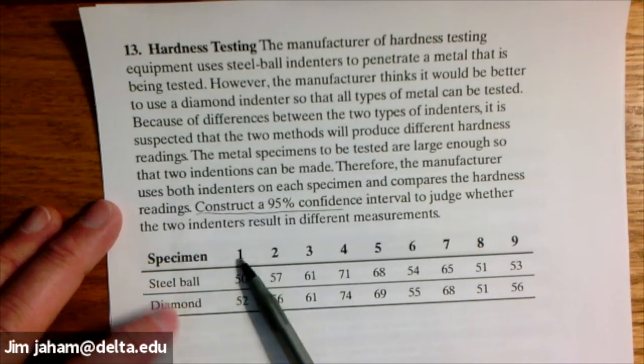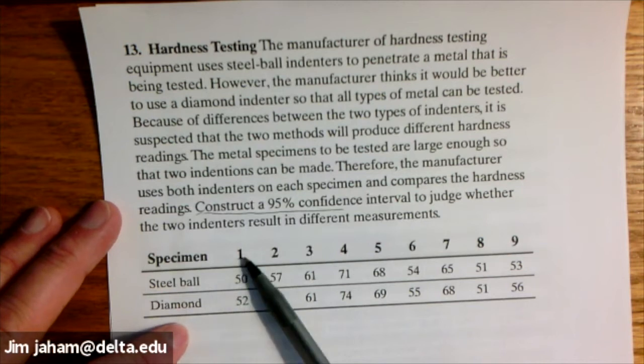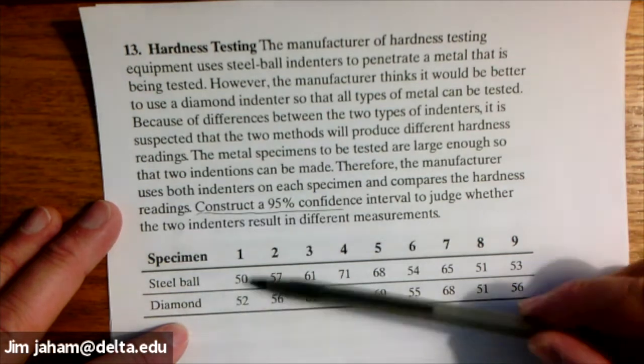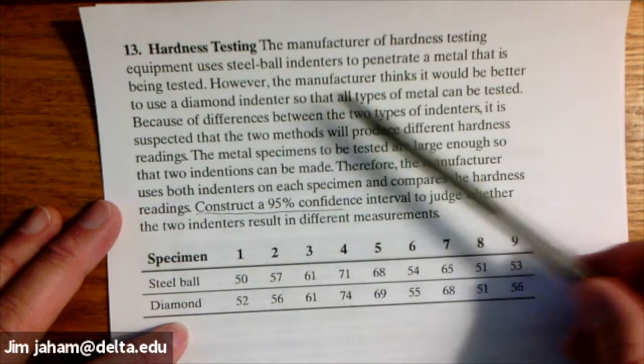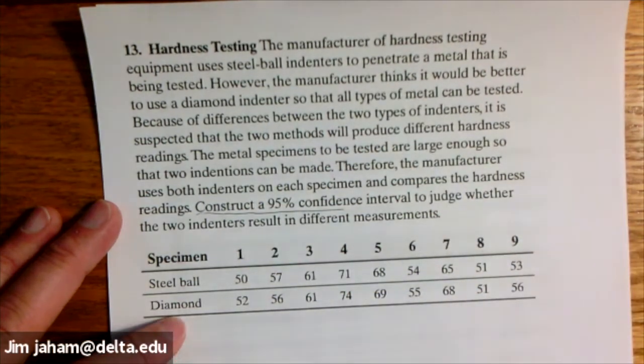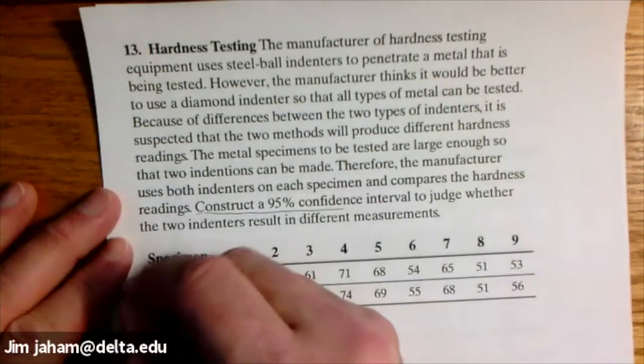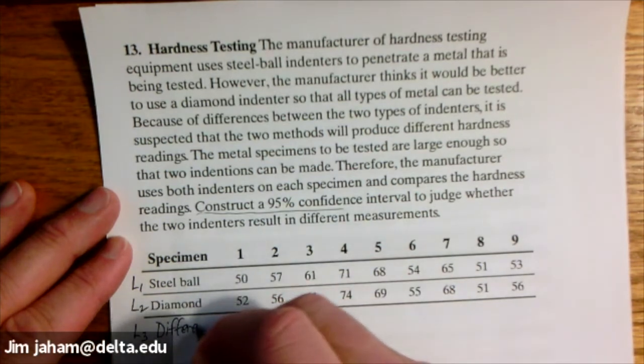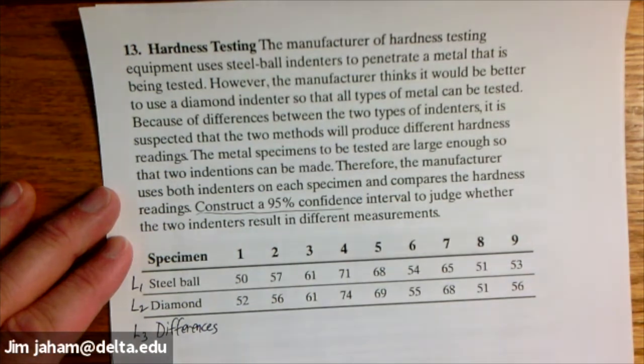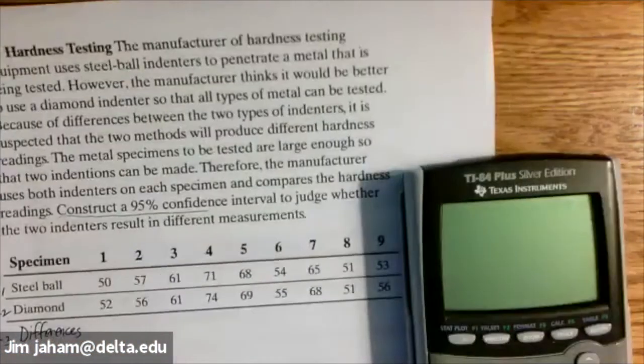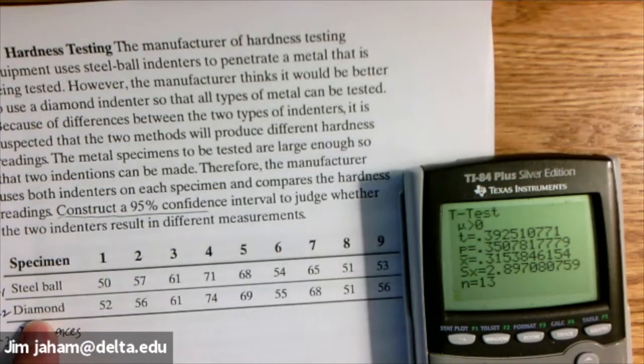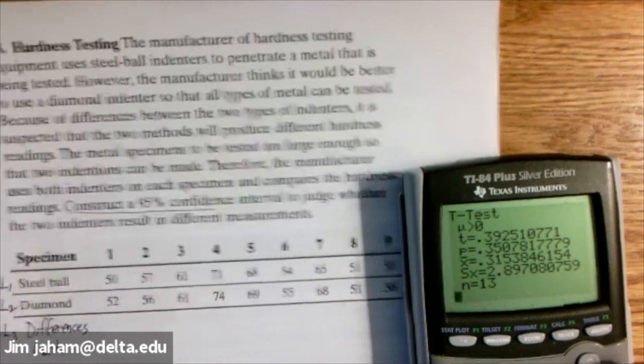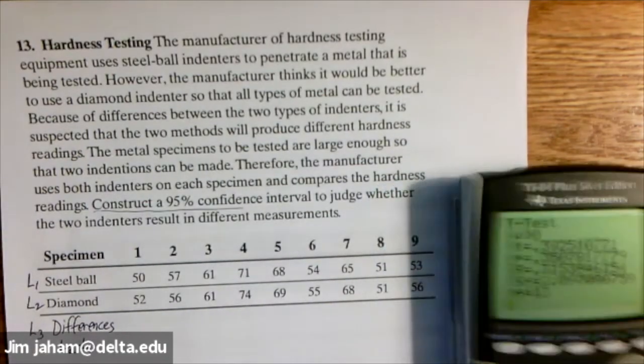There's a diamond indenter, which if you squeeze this device around the bat, it gives you this measure. And then you also have this steel ball device that measures the hardness. But here's bat one, just two different devices. So if a bat was hard, it would be hard for either of these testers. But these two numbers are related because they're measuring the same bat or the same product. So as before, we're going to put L1 is the steel ball measures and L2 is the diamond measures for the same bats. And then we're going to have the differences here.